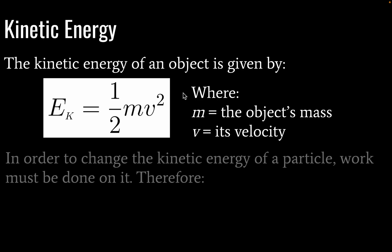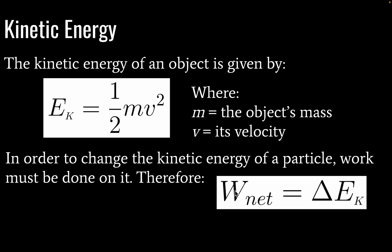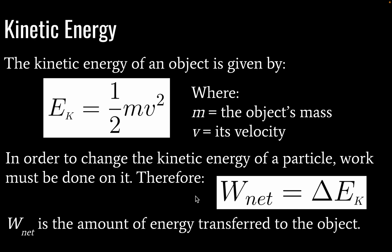If we want to change the kinetic energy of a particle, we have to do work on it. Net work done on a particle will equal its change in kinetic energy. Note that a change in kinetic energy could be from zero kinetic energy — we don't have to have a starting kinetic energy for this to be true. Net work is the amount of energy transferred to the object.